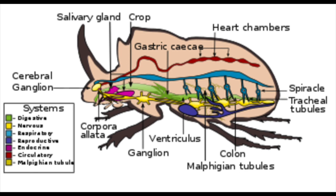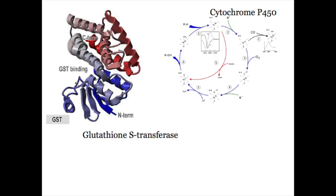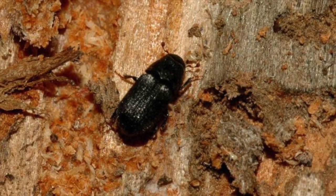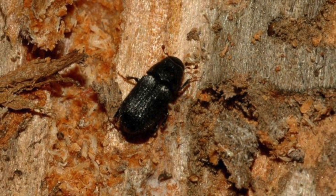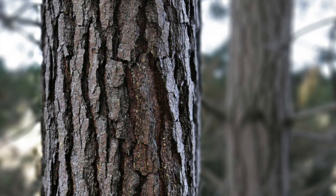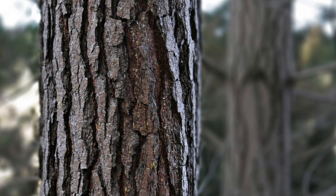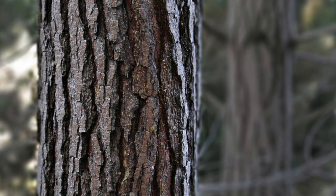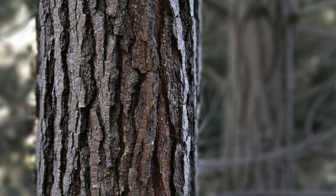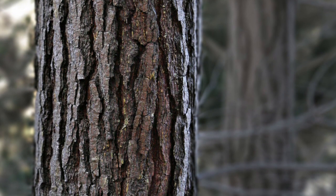Similar to humans, pine beetles have an alimentary canal in which food travels from their mouth to the rectum. The cytochrome P450, glutathione S-transferase, and plant cell wall degrading enzymes are all enzymes in the digestive system crucial to the mountain pine beetle's survival. The tough pine tree bark is broken down by these enzymes, allowing the pine beetle to extract and absorb nutrients. Another evolutionary adaptation is the fabrication of new chemicals to ward off enemies in competition. Without these evolutionary adaptations, pine beetles wouldn't be able to digest and absorb nutrients from the bark they eat off pine trees.